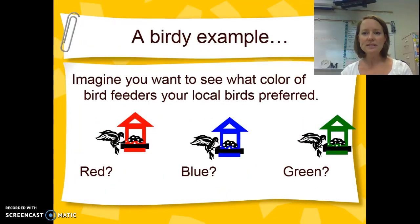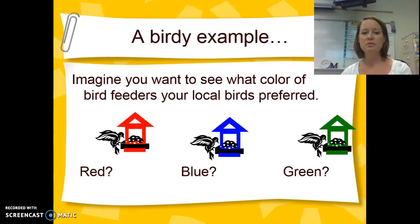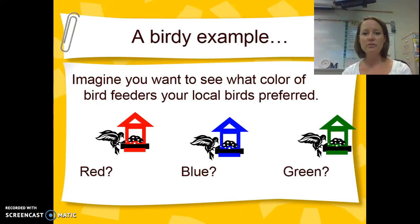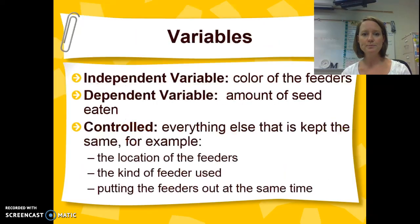Let's look at this example. If you want to know what color bird feeders that birds prefer, we've got three different colors: red, blue, and green. Our independent variable is the variable that changes with each of these feeders. The only variable that is different is the color, so that is our independent variable.